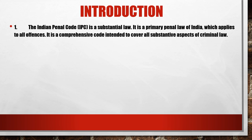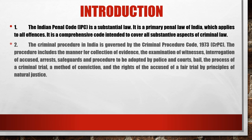But between the punishment and the offences, there is a procedure, and that procedure has been mentioned under the Criminal Procedure Code 1973. The procedure includes the manner of collection of evidence, examination of witnesses, interrogation of accused, arrest, safeguards and procedure to be adopted by police and courts, bail, the process of criminal trial, methods of conviction, and the rights of the accused to a fair trial by the principle of natural justice.